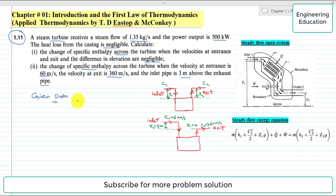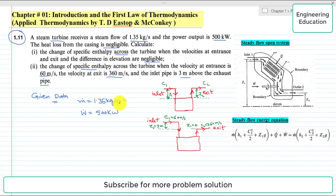The mass flow rate is 1.35 kilogram per second. Power output, that is W-dot, is 500 kilowatt. By convention this is the output from the system, so it will be considered as negative. Heat loss is negligible, meaning the heat transfer from the system is zero.